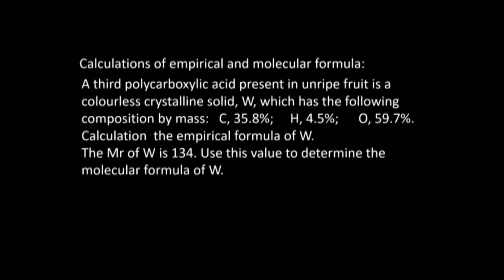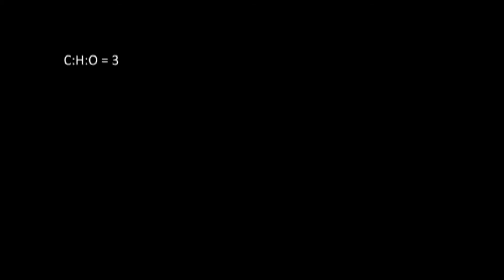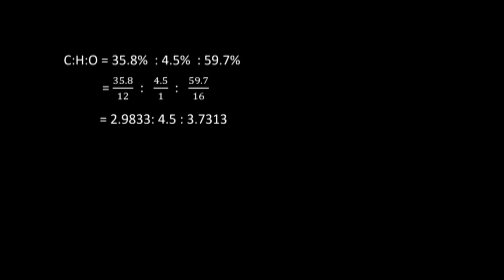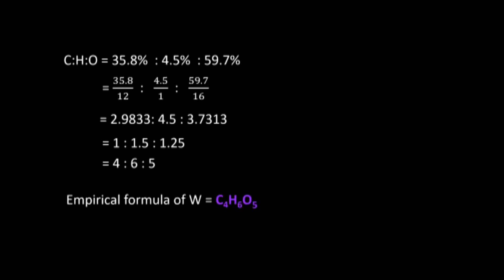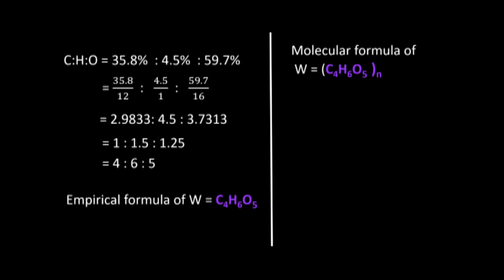Calculation of empirical and molecular formula: an organic compound contains carbon, hydrogen, and oxygen with percentages 35.8%, 4.5%, and 59.7% respectively. To find the empirical formula, divide each percentage by the relative atomic mass to get the molar ratio, then simplify by dividing by the smallest number. This gives a ratio of 4:6:5, so the empirical formula is C₄H₆O₅.